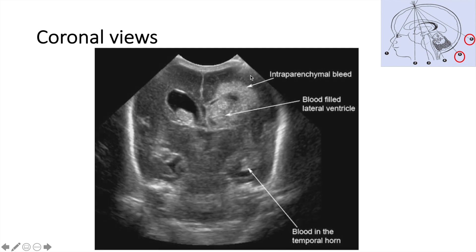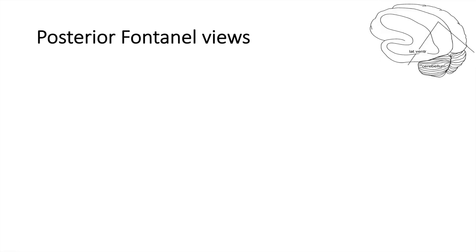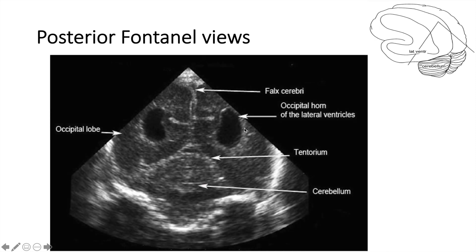This is more intense and represents grade four IVH — you can see there is extension into the brain parenchyma. Then this is a posterior cut of the brain, looking at the occipital lobe.